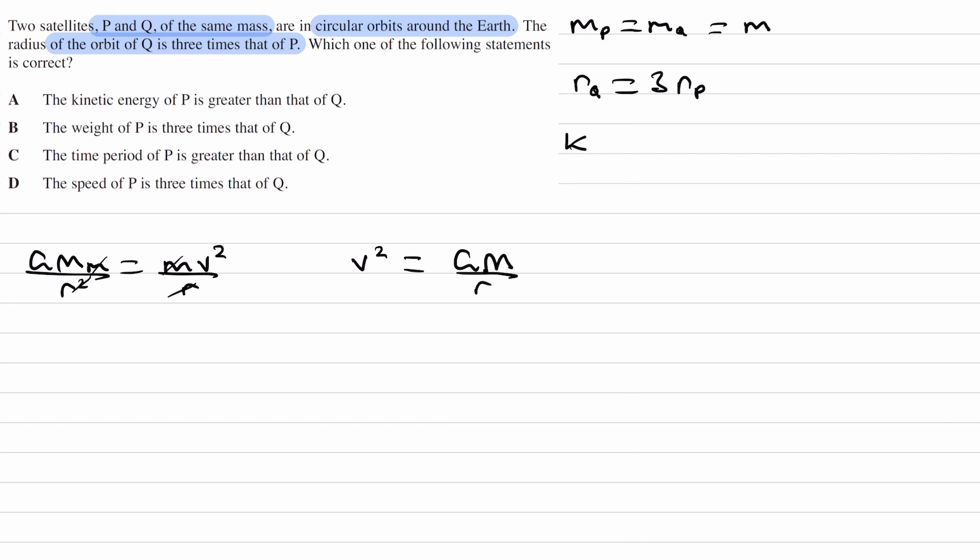And kinetic energy is half mv squared, so the masses are the same for both satellites, so kinetic energy is proportional to v squared. So we see from this equation, what's changing, this mass here is the mass of the Earth. So we see that v squared is proportional to 1 over R.